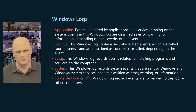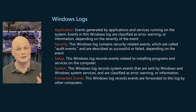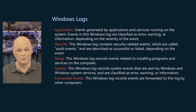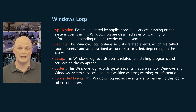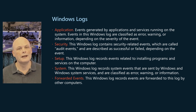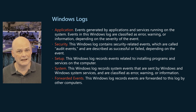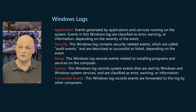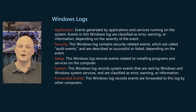The Application Log records event logs by application and services running on the system. Events in this particular log will be either error, warning, or information depending on the severity of the event. An error is a significant problem such as maybe you've lost some data. A warning is an event that is not necessarily significant but might indicate a possible future problem, and an informational event simply describes a successful operation of a program, driver, or service.